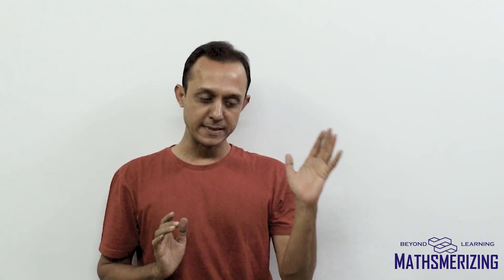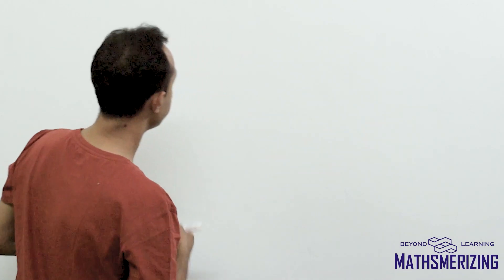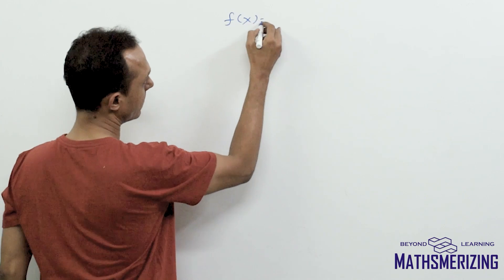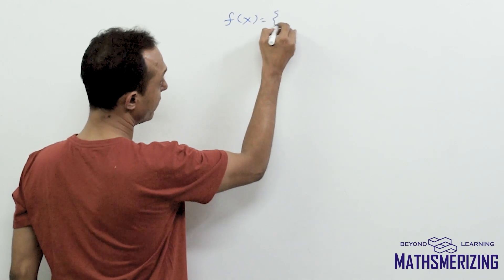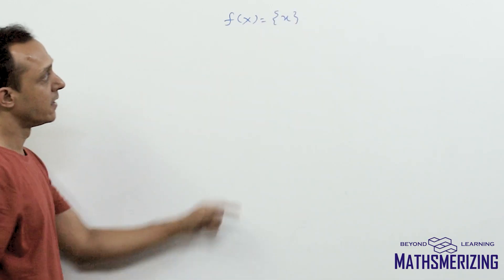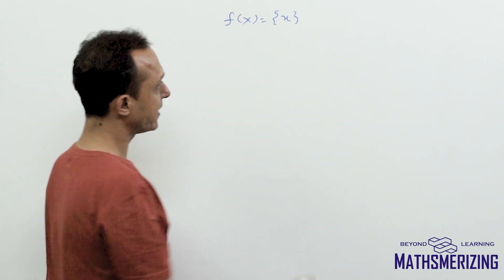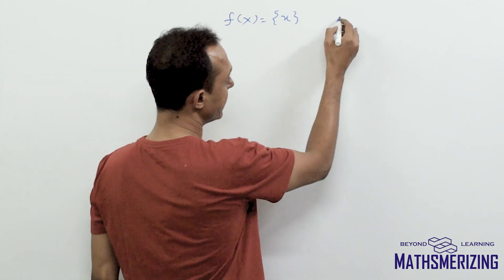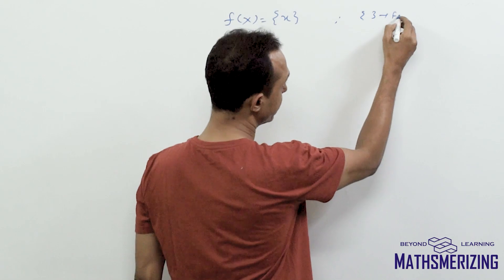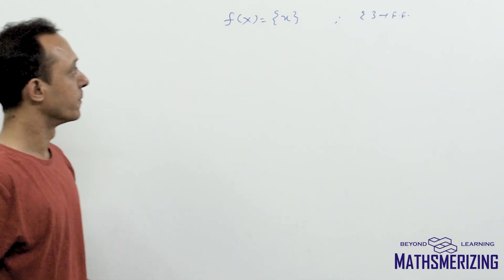Now we will discuss a function which is a close companion of greatest integer function, and that is fractional part function. Fractional part function is defined as f(x) equals the curly bracket of x. In standard texts, they will always use these curly brackets to represent the fractional part function.